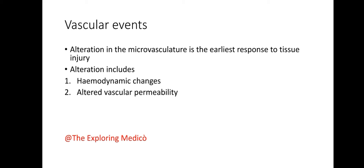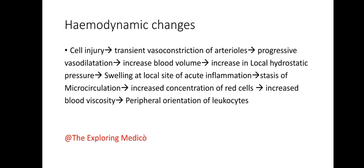Vascular events: alteration in the microvasculature is the earliest response to tissue injury. Alterations include hemodynamic changes and altered vascular permeability. In hemodynamic changes, cell injury leads to transient vasoconstriction of arterioles followed by progressive vasodilation.